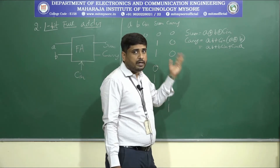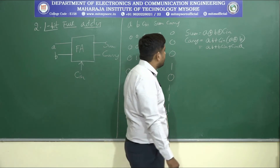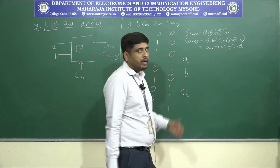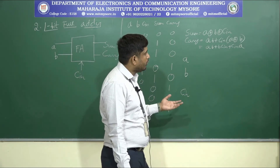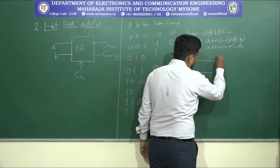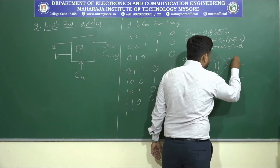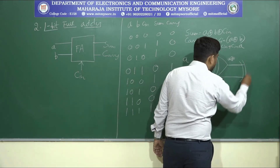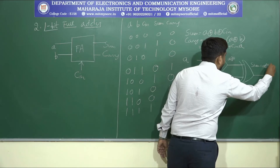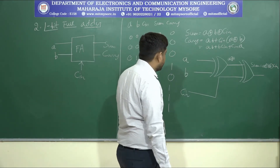Based on this reduced equation we write the logic circuit, and from the logic circuit we write the design and stimulus code. The circuit has three inputs: A, B, C_in. First, an XOR gate computes A XOR B. Then a second XOR gate takes that result and C_in to produce Sum = (A XOR B) XOR C_in.